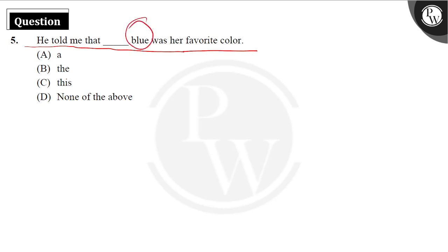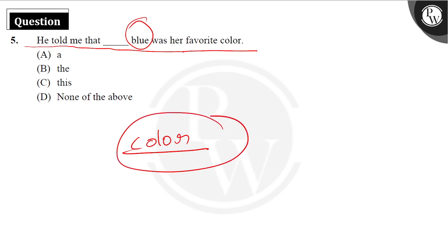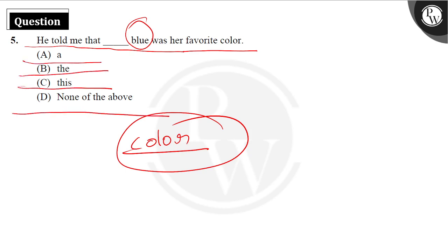Blue is a color, first of all. And it's not about singular or plural — we are talking about a color. So in the sentence, which option goes? Which blue? A blue? The blue? This blue? And none of the above.